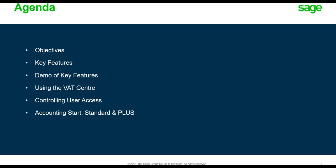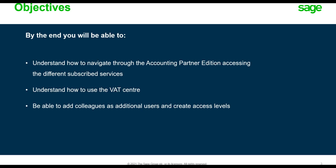Let's have a look at the agenda for today. We'll be going through the objectives, the key features of Partner Edition and a live demonstration. I will show you how to use the VAT Center, how to control user access, and what Sage has to offer to help you choose the best option for your practice. By the end of this webinar, you'll be able to navigate through Accountant Partner Edition, access different subscribed services, use the VAT Center, and add colleagues as additional users with different access levels.